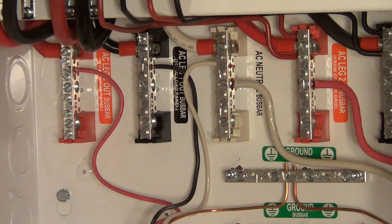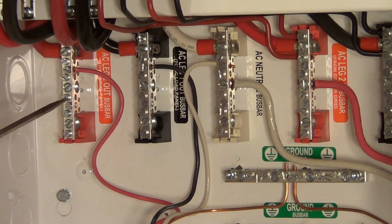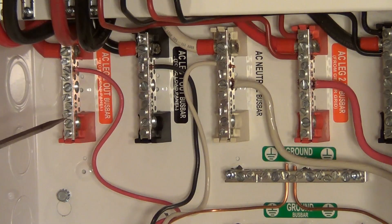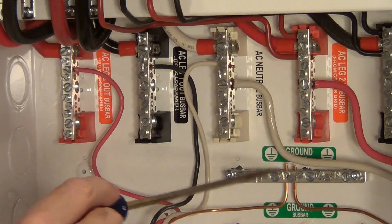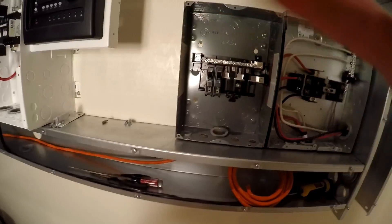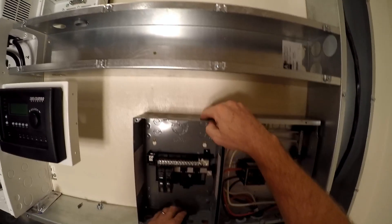This is the output of the inverters, comes down on AC output leg two, leg one, the neutral, and the ground. Into the cable tray and up into our output panel.